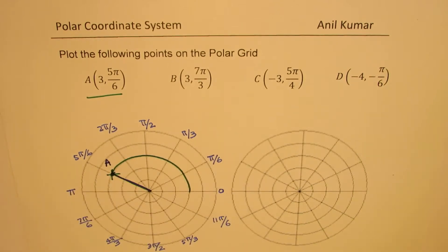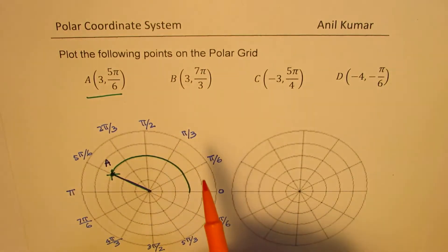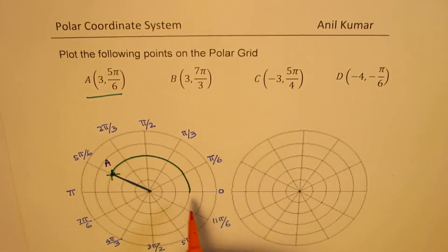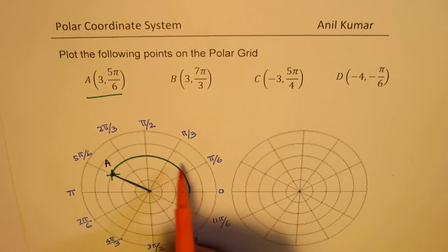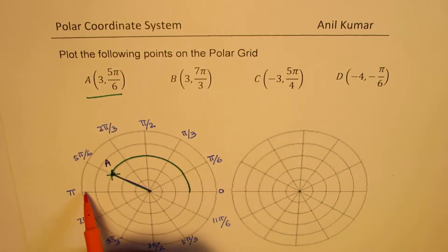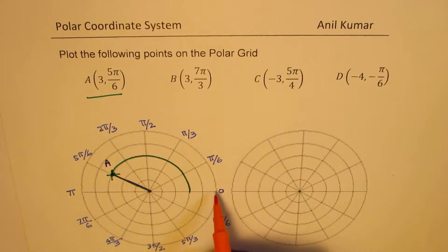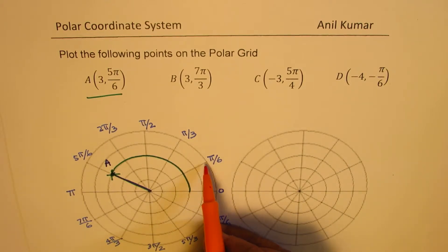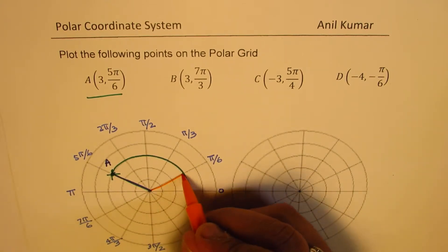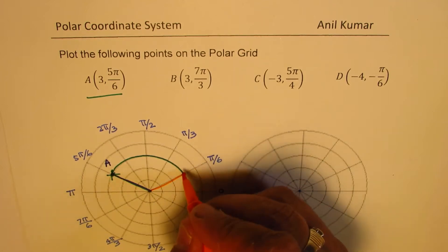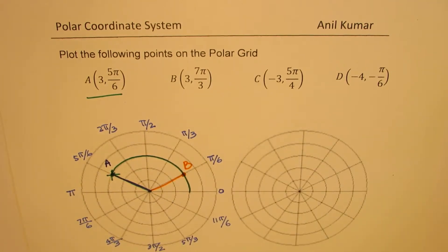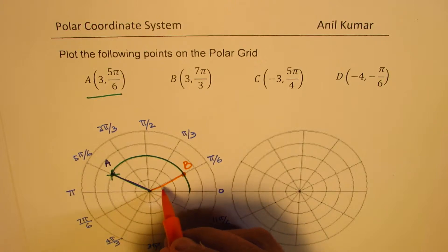The next point is b: (3, 7π/3). Now 7π/3 means we have 6π/3 — which is a full circle — plus an extra π/3. So we go around one full circle and then land at the π/3 position, 3 units out, and that becomes point b.